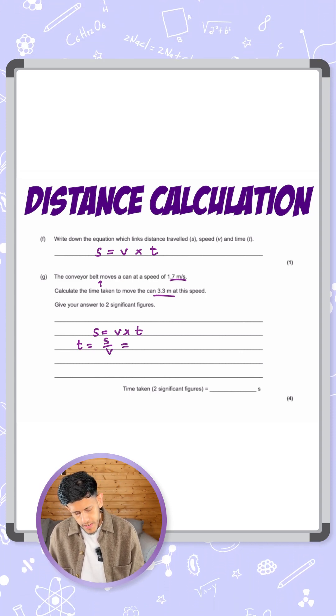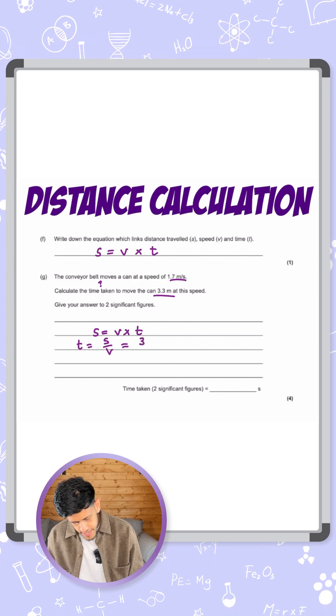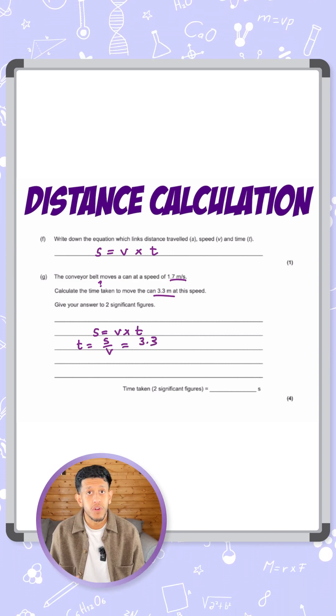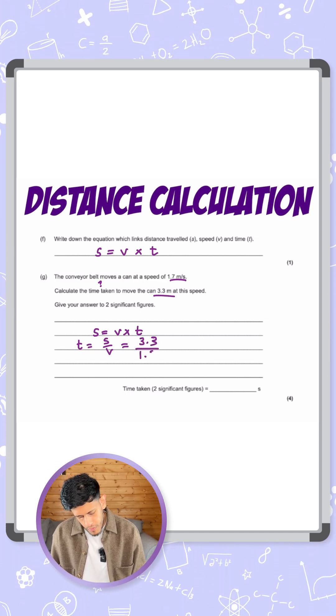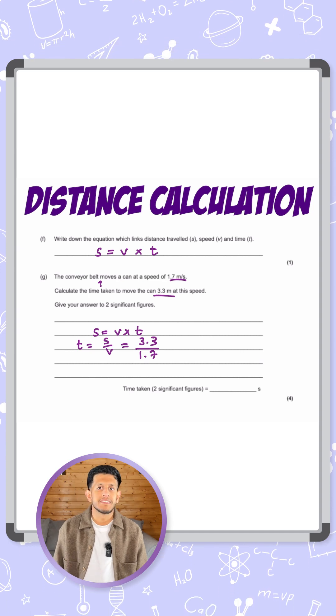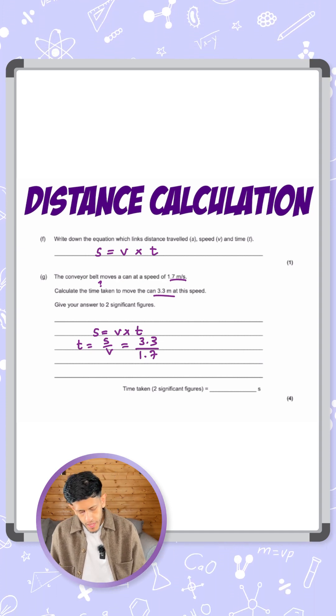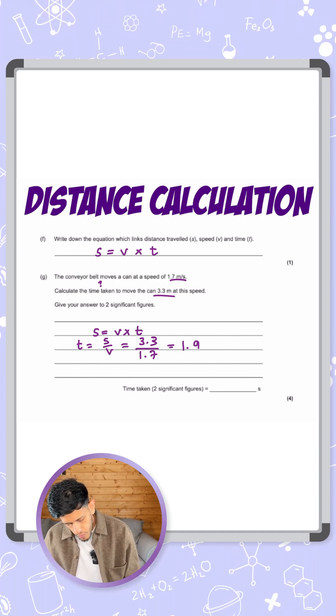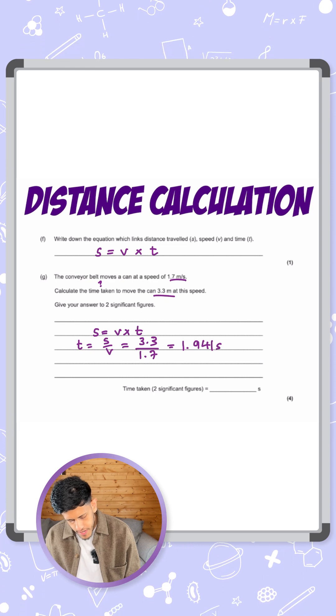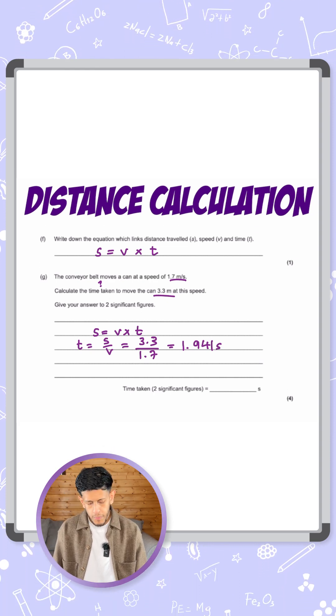Now I'll use the numbers they've given. So that is 3.3 for the distance, and that is in meters so we're okay there, divided by the speed 1.7, which is also in its standard unit of meters per second. So I put those together and I get an answer of 1.941 seconds. Now that is only three of the marks—the fourth mark is the important point.